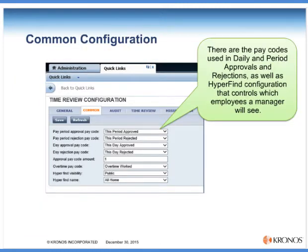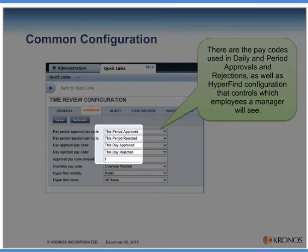The common tab contains the pay code configuration. We created pay codes before installing the toolkit to allow us to track daily and period approval and rejection, and we see those pay codes selected here. We also indicate the amount of the pay code that will be entered when the employee approves or rejects their time.